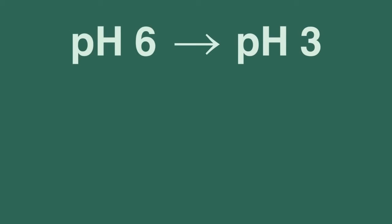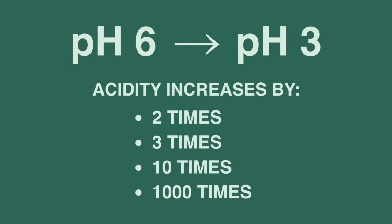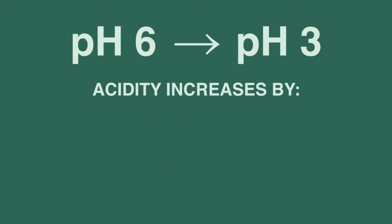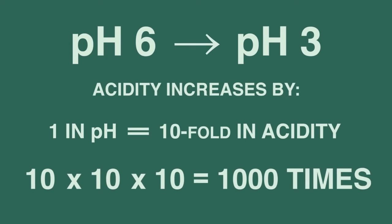When the pH changes from 6 to 3, what do you think the acidity increases by? Two times? Three times? Ten times? A thousand times? Remember that each change of one in pH is a tenfold change in acidity, so changing from 6 to 3 is 10 times 10 times 10, or a thousand times more acidic.